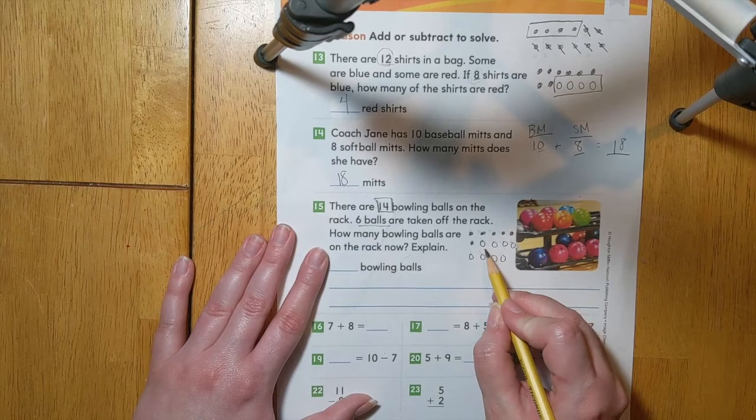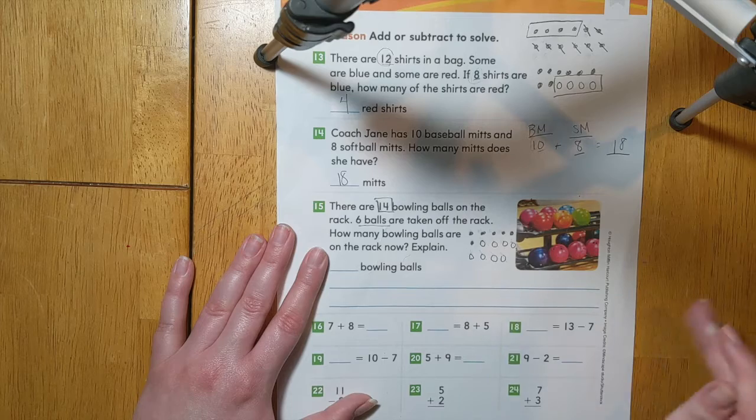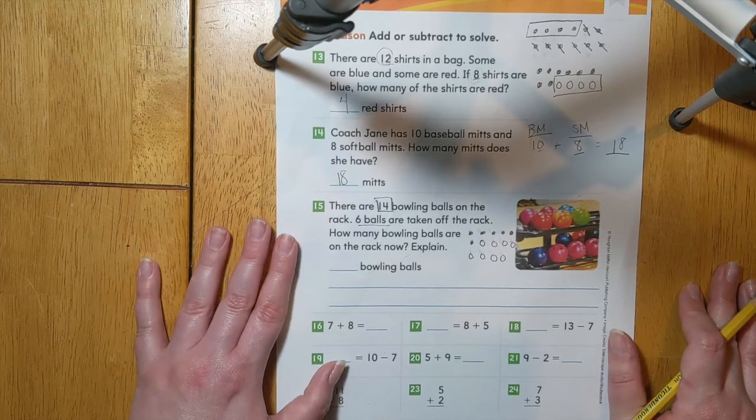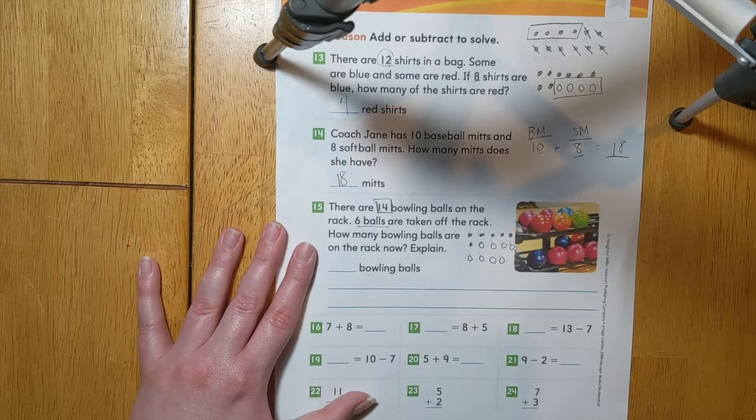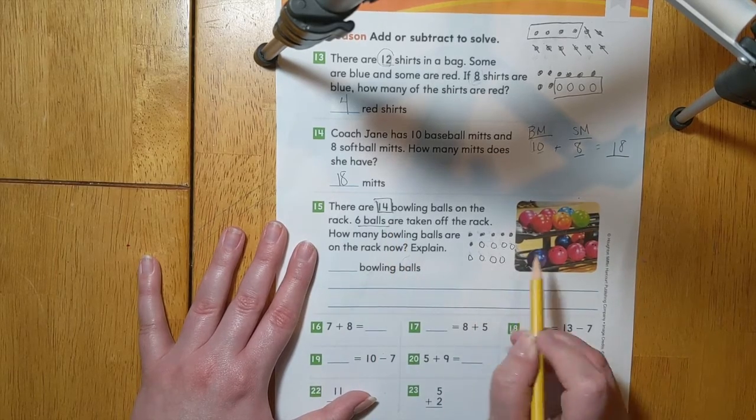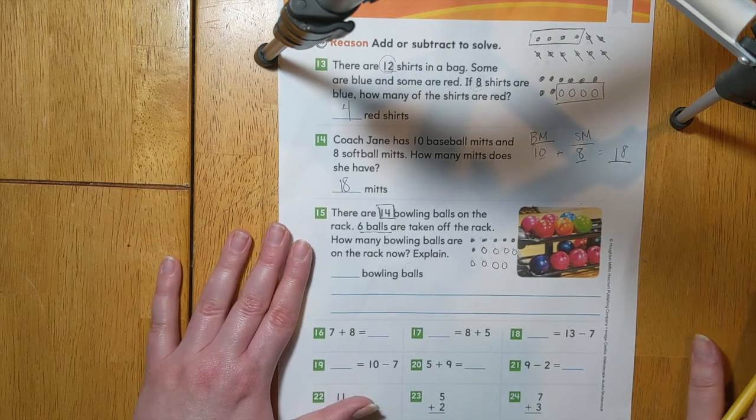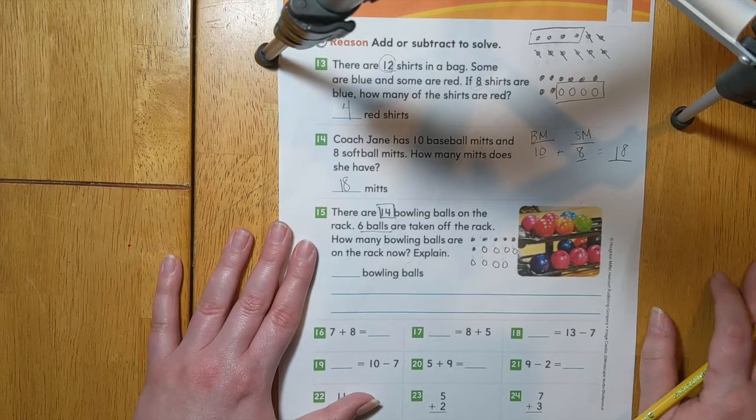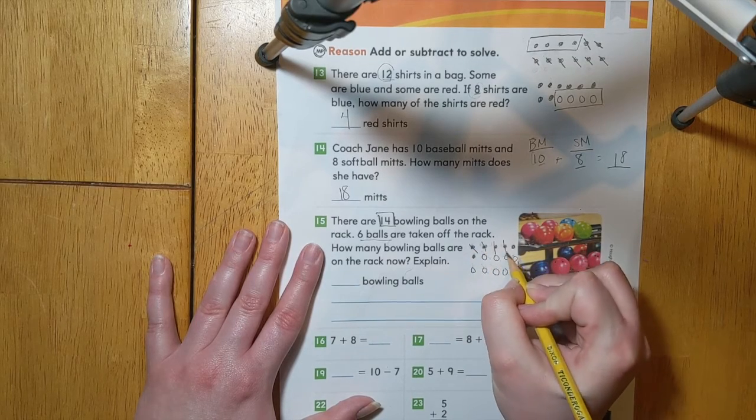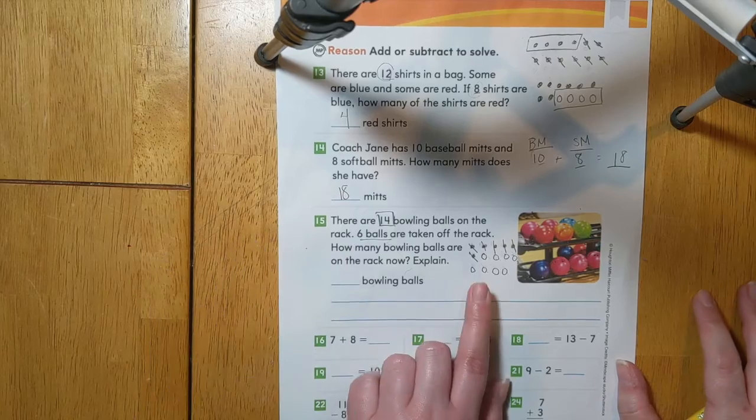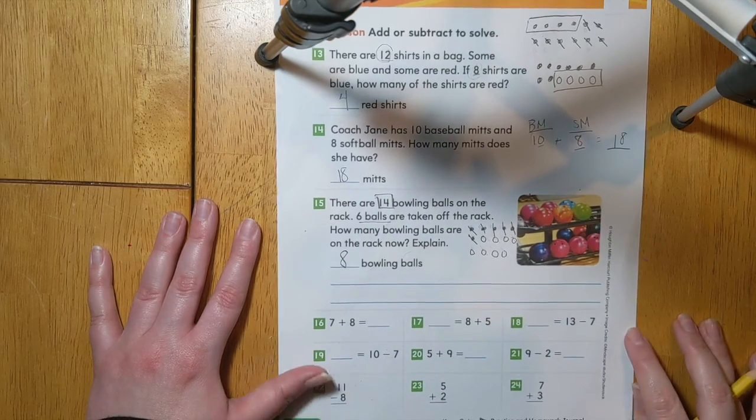We just added 1, 2, 3, 4, 5, 6, 7, 8 circles for a total of 14. Using this picture, we can then subtract to find how many balls were taken and how many are left. All together we have 14. Six are taken away. So we can subtract 6. 1, 2, 3, 4, 5, 6. And that leaves us with 8. So we know that there are 8 bowling balls still on the rack.